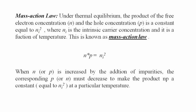What is the mass action law? Under thermal equilibrium, the product of the free electron concentration n and the hole concentration p is a constant equal to ni squared, where ni is the intrinsic carrier concentration and is a function of temperature. This is known as the mass action law. When n or p is increased by addition of impurities, the corresponding p or n must decrease to keep the product n times p constant and equal to ni squared at a particular temperature.